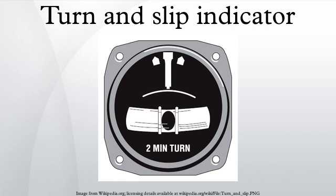The turn indicator is a gyroscopic instrument that works on the principle of precession. The gyro is mounted in a gimbal, with the gyro's rotational axis in line with the lateral axis of the aircraft, while the gimbal has limited freedom around the longitudinal axis. As the aircraft yaws, a torque force is applied to the gyro around the vertical axis, which causes gyro precession around the roll axis. The gyro spins on an axis that is 90 degrees relative to the direction of the applied yaw torque force.